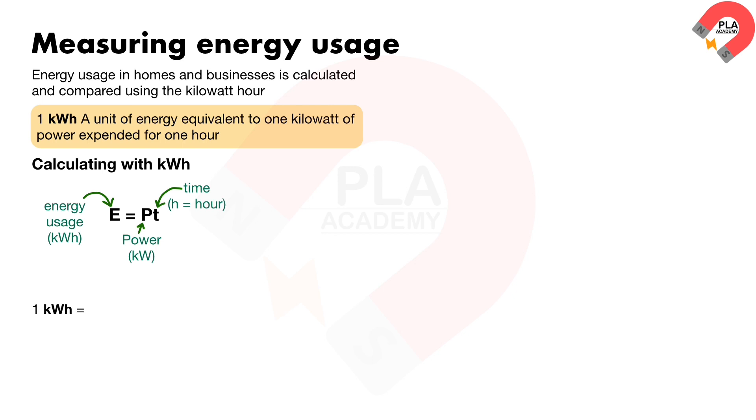Therefore, one kilowatt-hour equals one thousand watts times three thousand six hundred seconds equals three point six times ten to the power of six joules. Since one kilowatt equals one thousand watts and one hour equals three thousand six hundred seconds.